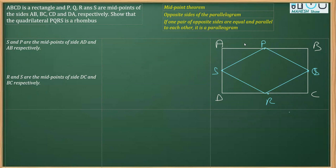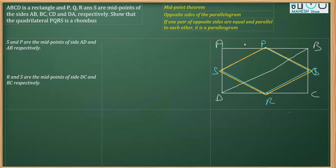Since we are going to apply the midpoint theorem, remember it is applicable only in the case of a triangle. So I will join diagonal BD and apply the midpoint theorem in two triangles one by one. We will first prove PQRS is a parallelogram, and in the next part we will prove it is a rhombus.